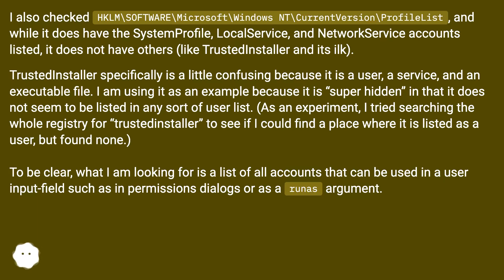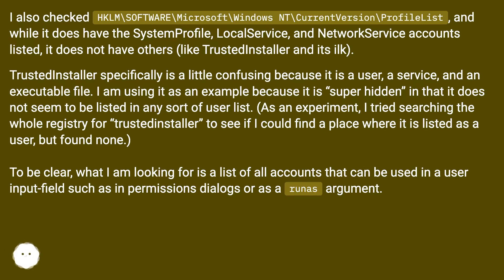TrustedInstaller specifically is a little confusing because it is a user, a service, and an executable file. I'm using it as an example because it is super hidden in that it does not seem to be listed in any sort of user list. As an experiment, I tried searching the whole registry for TrustedInstaller to see if I could find a place where it is listed as a user, but found none. To be clear, what I'm looking for is a list of all accounts that can be used in a user input field, such as in permissions dialogues or as a runas argument.